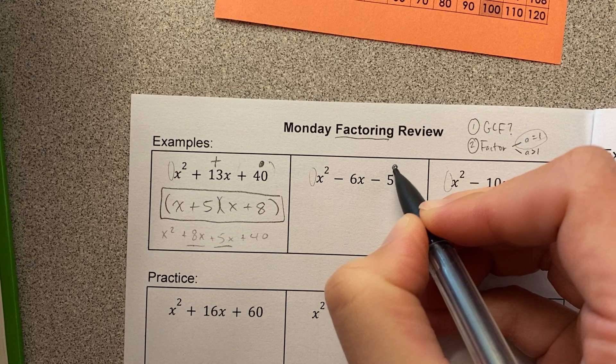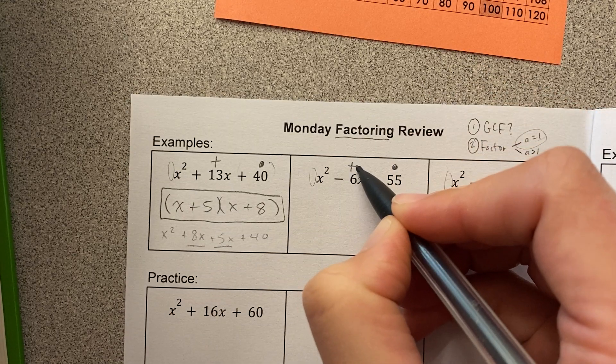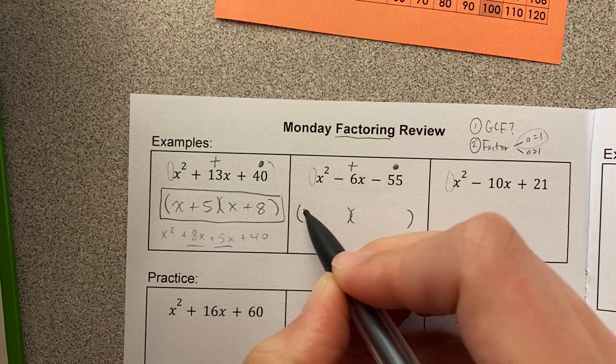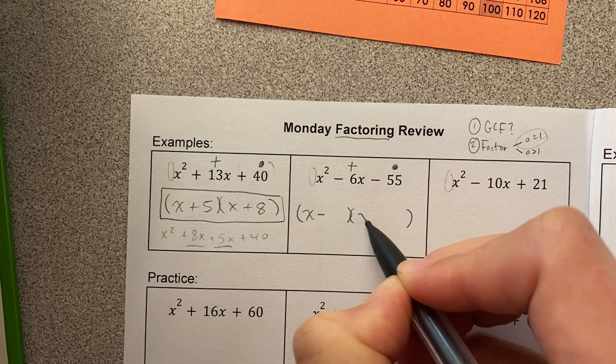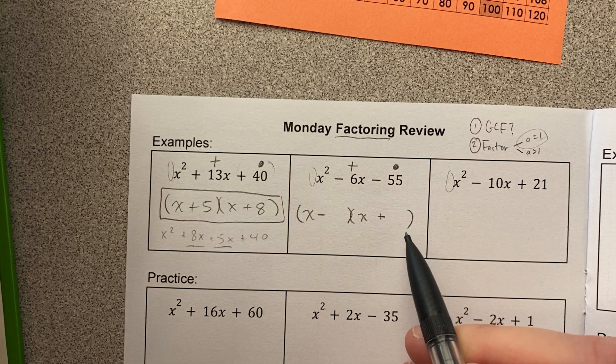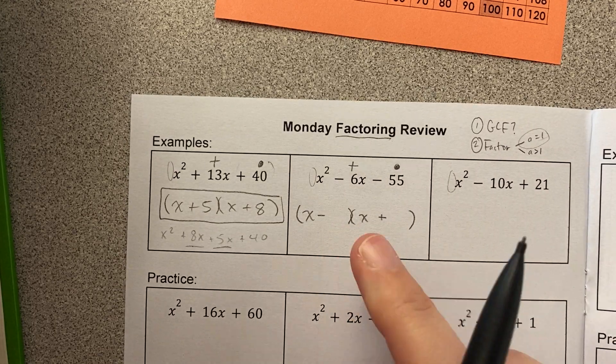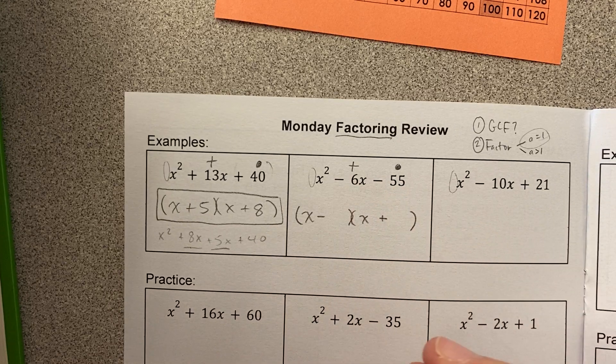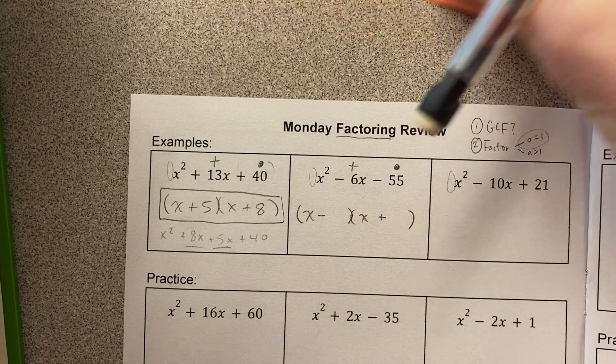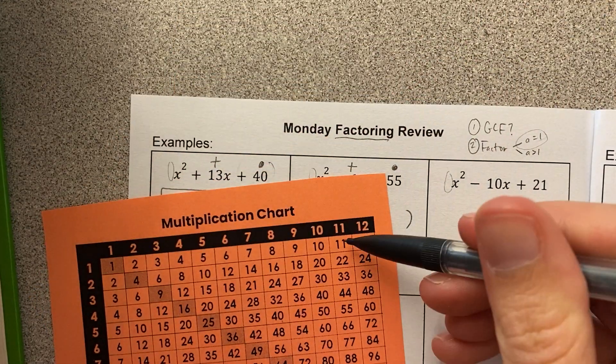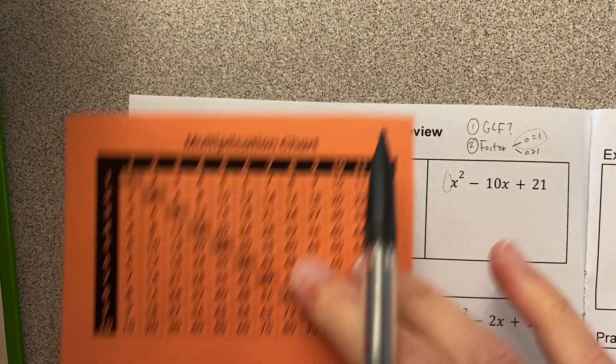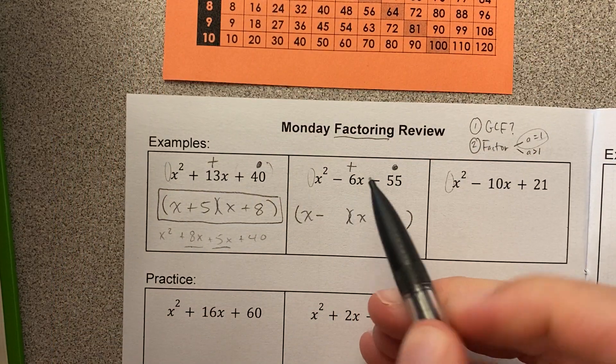So now I need two numbers that multiply to negative 55 and add to negative 6. Right away when I think I need two numbers that multiply to a negative, I know that's gonna be one positive and one negative. And so when I add my positive and negative, that means I need two numbers that multiply to 55, and when I subtract them, I get 6. For me, whenever I see a number like 55 or 44 or 33, I think that's 11. So 11 and 5 multiply to 55, and they subtract to 6.